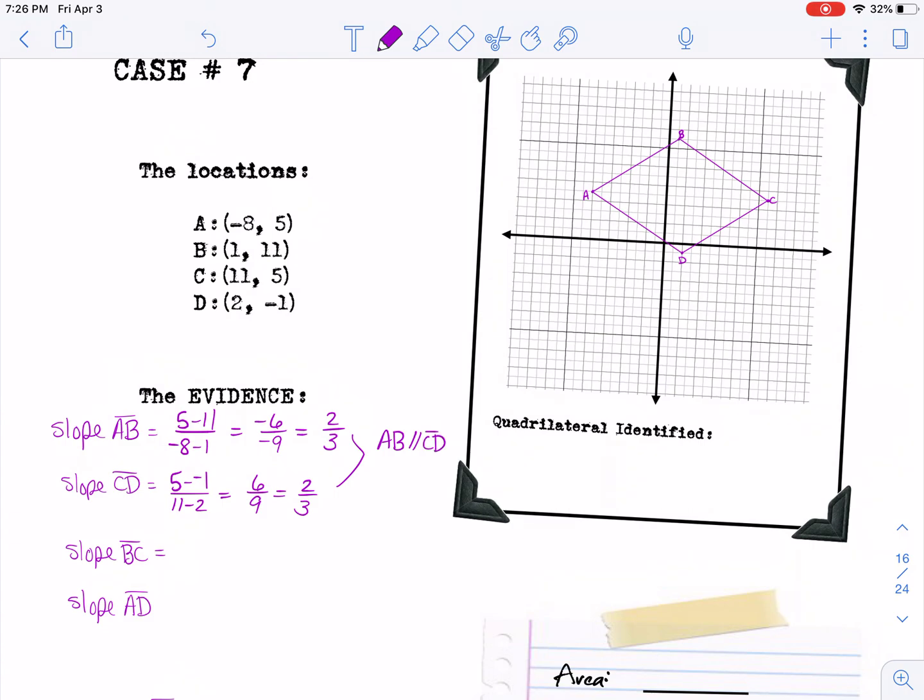The slope of BC is 11 minus 5 over 1 minus 11, and that gives you 6 over negative 10, which reduces to negative 3/5. For the slope of AD, you would have 5 minus negative 1 over negative 8 minus 2, so that gives you 6 over negative 10, or negative 3/5 again. So these two are parallel.